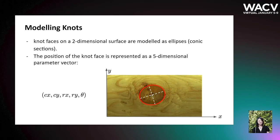The position of the knot face is represented as a five-dimensional parameter vector, which are CX, CY, the centers of the ellipse, and RX, RY are the semi-diameter axes, and also theta, which is the rotation angle.